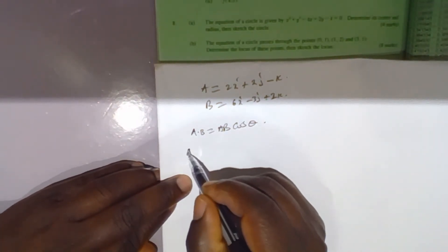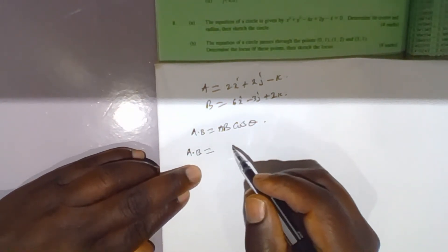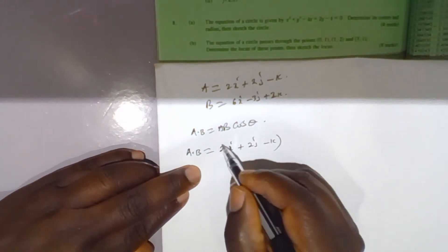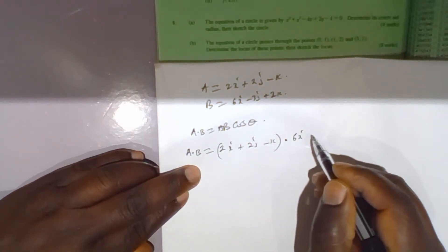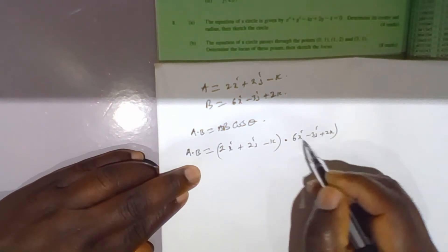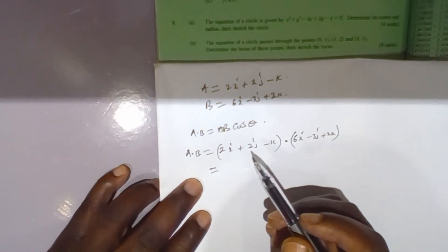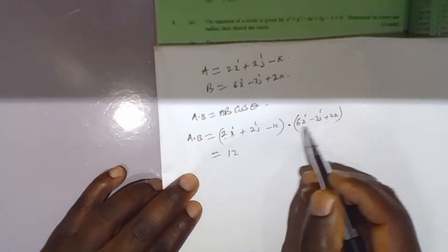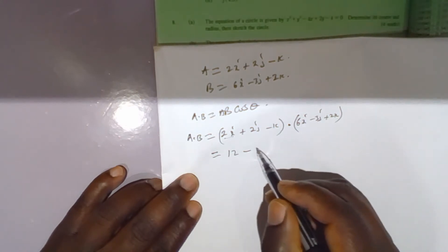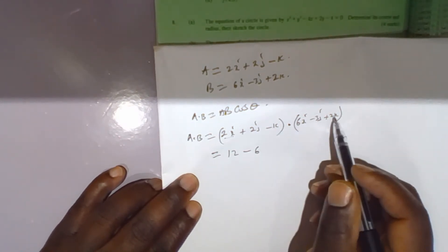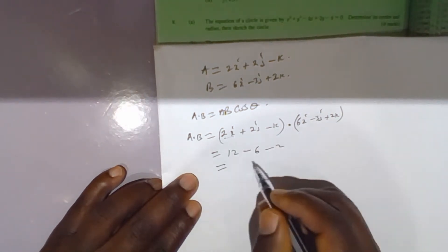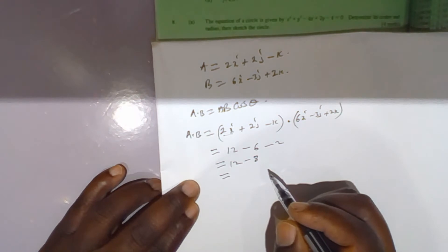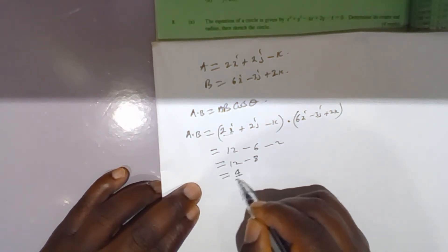Now a dot b equals (2i + 2j - k) dot (6i - 3j + 2k). This equals 2 times 6 = 12, plus 2 times negative 3 = minus 6, plus negative 1 times 2 = minus 2. So this equals 12 minus 6 minus 2, which equals 4.